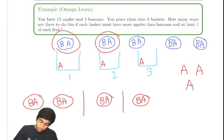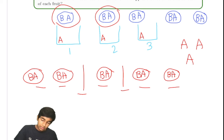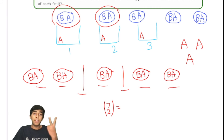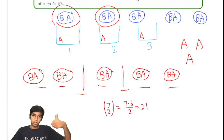First, let's distribute the five banapples to three baskets. That's a classic stars and bars problem: five items, three baskets, two bars, giving seven choose two equals 21 ways.